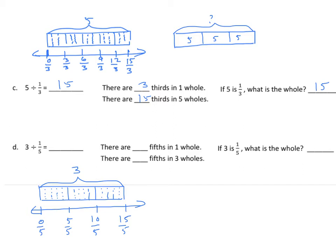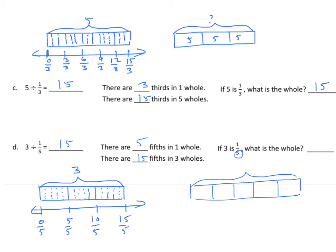Filling in the blank: how many fifths in one whole? Counting: one, two, three, four, five — we put in five. How many fifths in three wholes? Looking at the number line, there are fifteen-fifths in three wholes, so three divided by one-fifth is fifteen. For the second diagram: if three is one-fifth, what is the whole? The denominator is five, so we partition into five equal parts, each worth three: zero, three, six, nine, twelve, fifteen. The answer is fifteen.